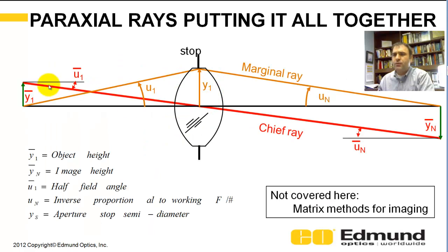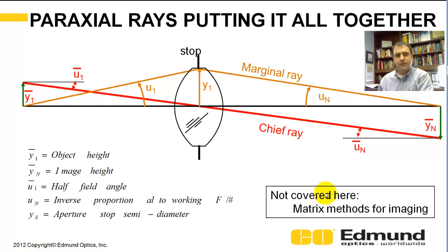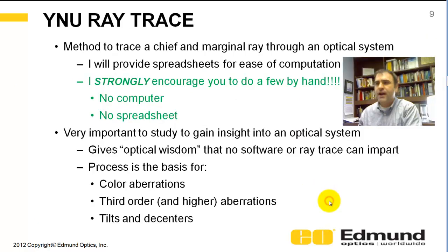Putting it all together: the marginal ray in orange starts at the feet of the object, goes through the edge of the stop, and comes back to the feet at the image. The chief ray starts at the headdress, goes through the aperture stop, and then defines the height of the image. There are also matrix methods you can use to characterize a full optical system, but we're not going to cover that.